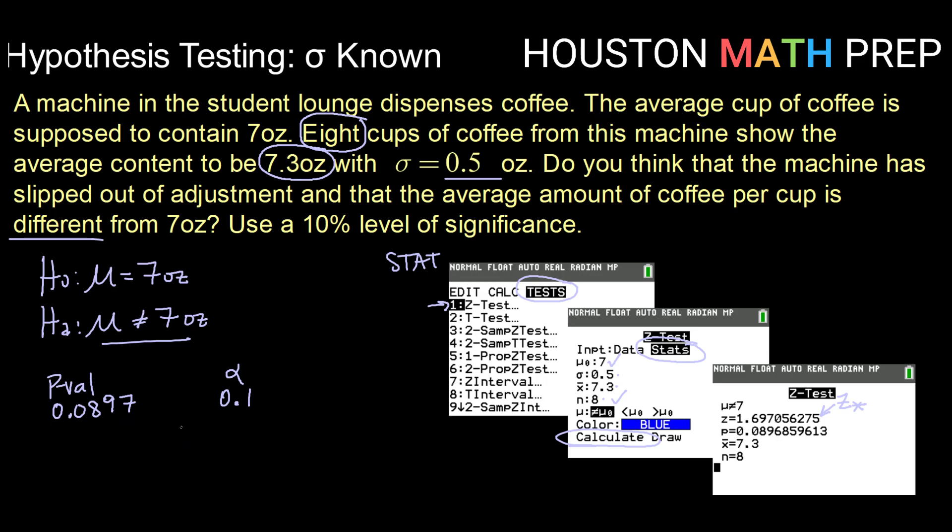And we want to compare that to our alpha value. Our alpha value is 10% or 0.1. So in this case, our alpha value is larger than our p-value. So our p-value is low. So that would mean that we would reject our null hypothesis here. So if the p-value is smaller than alpha, then that means it would be very unusual to have a sample with a mean of 7.3 if the true mean was 7. So we would make the decision here to reject our null hypothesis and say there is sufficient evidence to reject the claim that the true average ounces dispensed by the machine is 7.